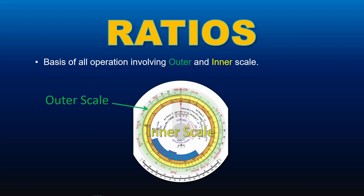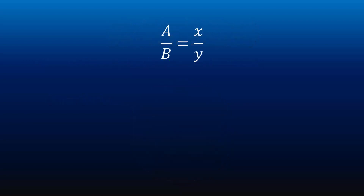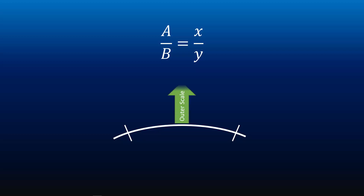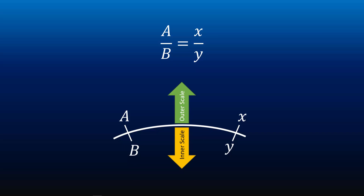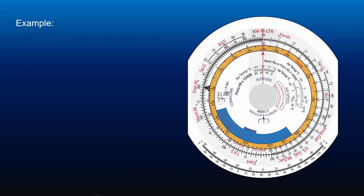The first operation that we will look into is ratios. CRP5 can be used to solve ratio problems easily and quickly. In fact, ratios are the basis of all operations involving the outer and inner scale. To understand this, let's say A over B is equal to X over Y. The white arc on the screen represents the outer and inner scale — the top of the white line represents the outer scale and the bottom represents the inner scale. The arrangement of the variables on the outer and inner scales are shown on the screen, and the arrangement in the formula is directly reflected onto the scales. Let's look at an example.